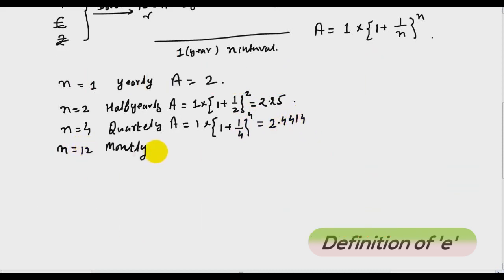When n is 12, it is monthly and amount is 2.613035. So if the bank pays me after every month my interest, then at the end of the year I will get 2.613035 rupees, dollars or euros, rather than 2 if the bank pays interest only once a year.